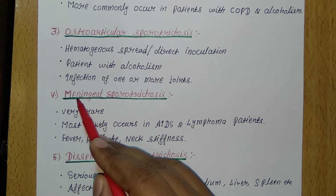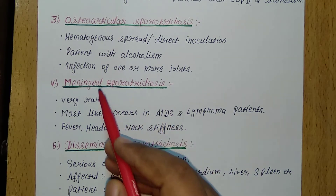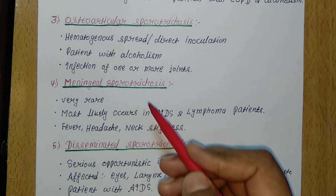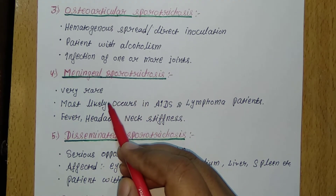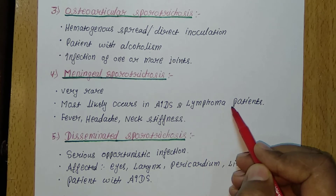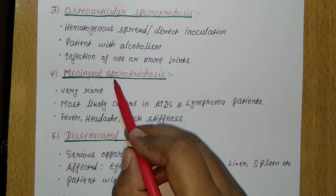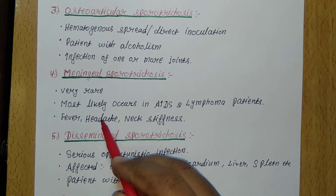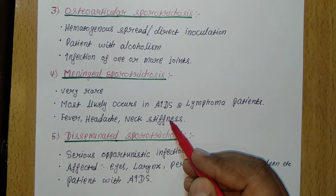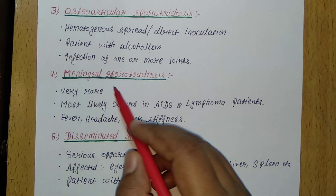The fourth type is meningeal Sporotrichosis, which is very rare. It most likely occurs in AIDS patients and lymphoma patients. If a patient is suffering from meningeal Sporotrichosis, they may have symptoms like fever, headache, and neck stiffness.